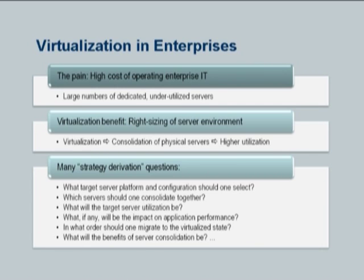There are many strategy derivation questions: what is the target server platform and configuration? How many servers do you need? What is the right sizing? What will the target server utilization be? What is the implication on application performance? How do you decide a consolidation plan? It's actually a temporal bin packing problem — utilization of a server is a time series, not a single value. How do you compact everything such that your peaks don't line up? If it's 10 things you can do it by hand — 30,000 servers is a completely different ball game.